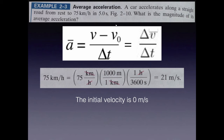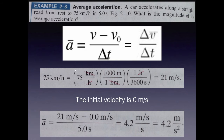Plugging everything in: 21 meters per second final velocity, 0 meters per second initial velocity, and 5 seconds for delta t gives us about 4.2 meters per second squared. Those two seconds multiply together to give meters per second squared. 4.2 reflects the appropriate significant figures — I only had two sig figs for both of my initial measurements, and since we're dividing, the final answer can only have two sig figs.